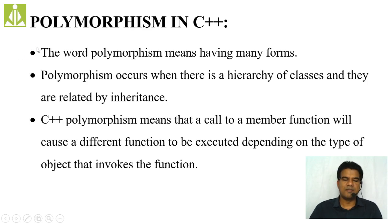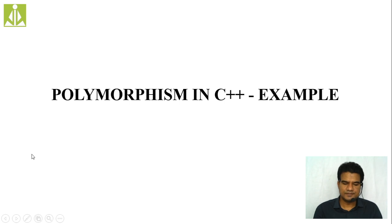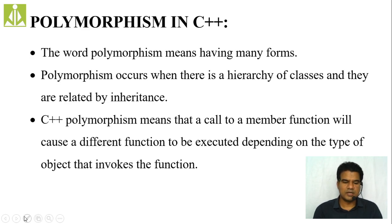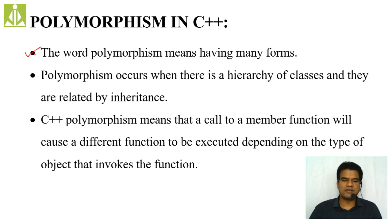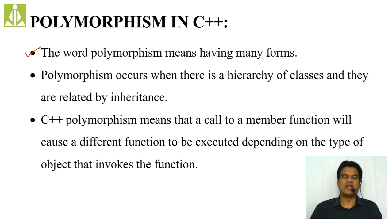Quickly, polymorphism means having many forms — poly means many and morphism means forms. Generally, polymorphism is used when we have the concept or relationship of inheritance between two or more classes.